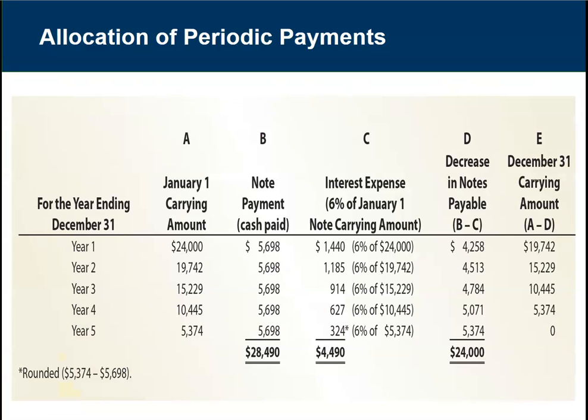What we have here is basically an amortization schedule. An amortization schedule is usually viewed from the perspective of the lender, because a loan is an example of an intangible asset that must be amortized. But here we're looking at this from the perspective of the borrower. On January 1 of year 1, we borrowed $24,000.